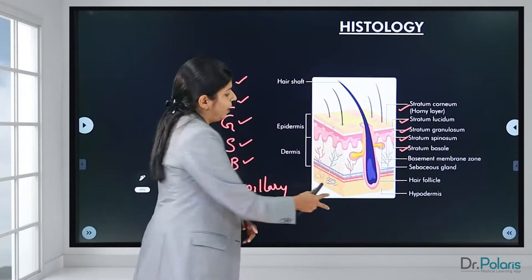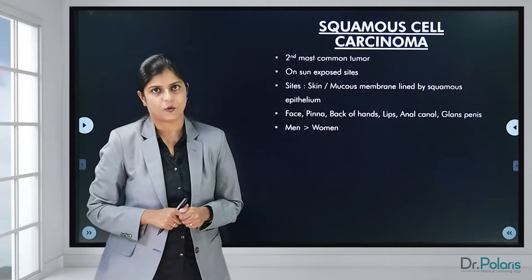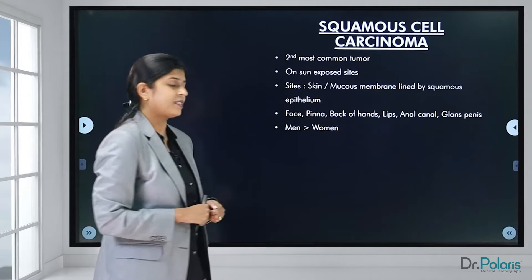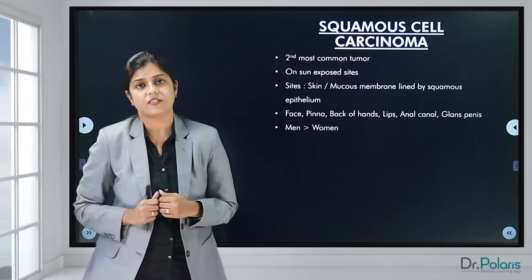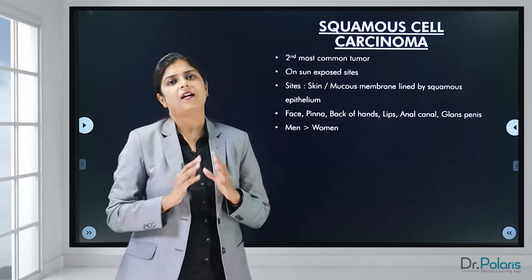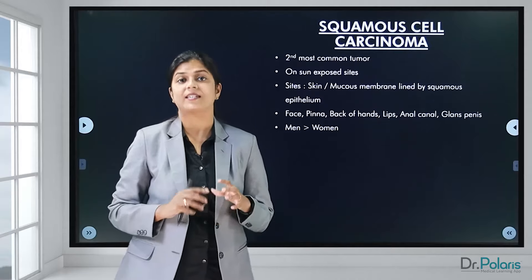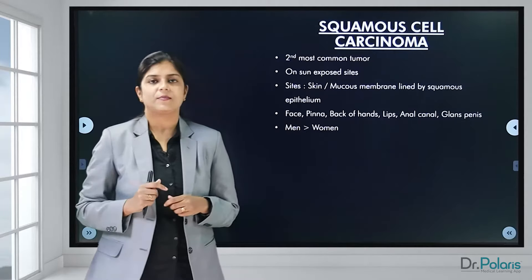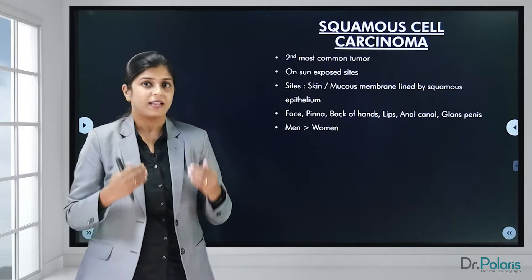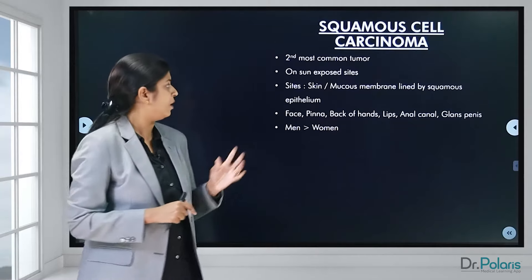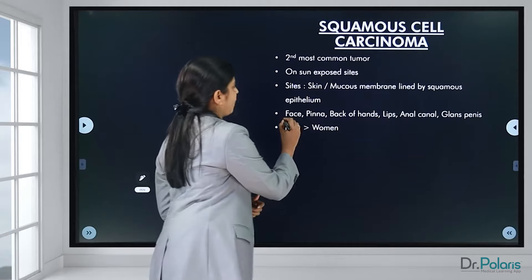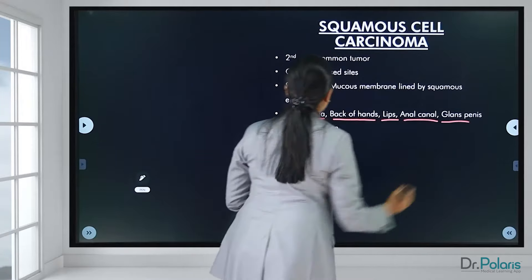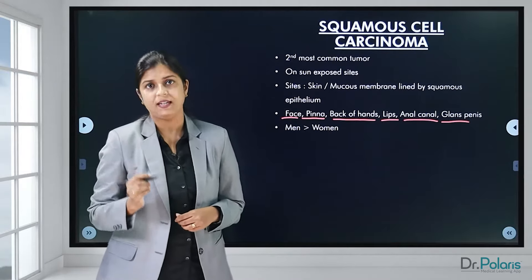Now let us go to squamous cell carcinoma. It is the second most common tumor arising in sun-exposed sites. It can occur wherever there is a lining of stratified squamous epithelium — anywhere in the skin or in mucous membranes like the oral cavity, cervix, or esophagus. Common sites are the face, pinna, back of hands, lips, anal canal, and glans penis. It is more common in men than women.